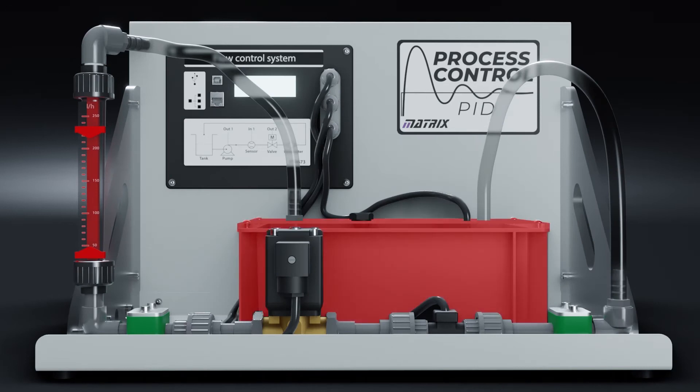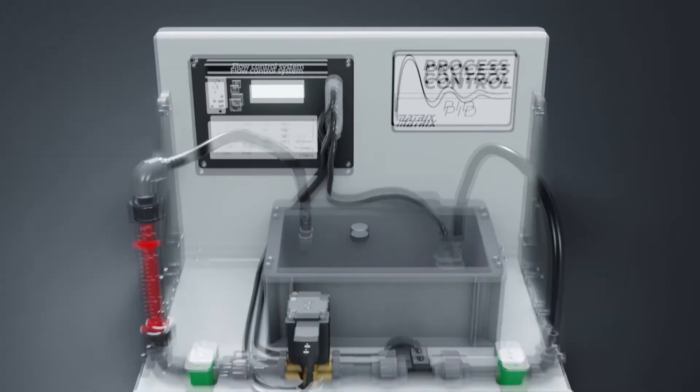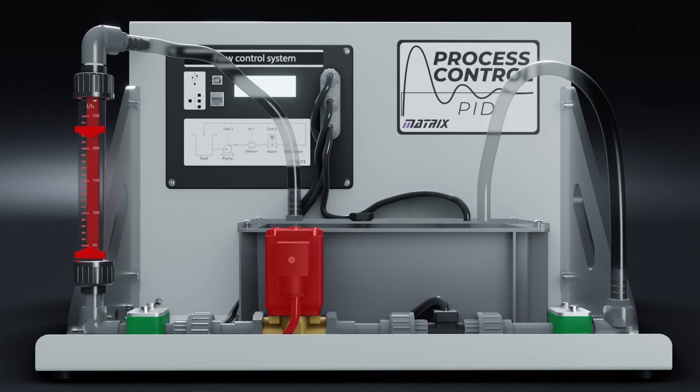The flow system consists of a water tank, variable speed pump, a turbine type flow sensor, an electrically operated proportional valve, and a variable area flow meter or rotor meter. This allows students to adjust the flow rate via the pump speed and the valve opening to develop a PID-based control system.